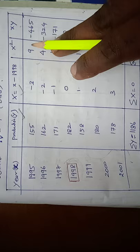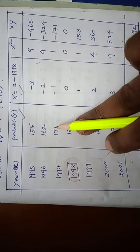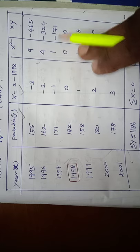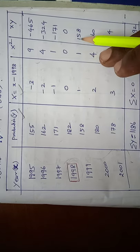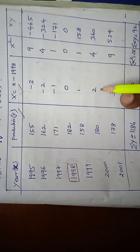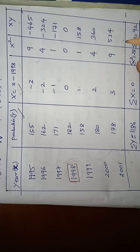So 155 into minus 3 is minus 465. 162 into minus 2 is minus 324. 171 into minus 1 is minus 171. 182 into minus 2 is minus 335. 172 into minus 3 is minus 535.